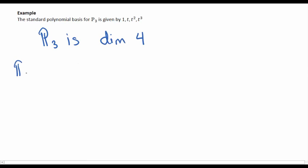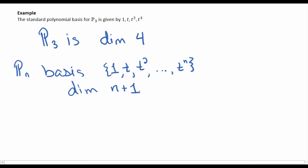So in general, for Pn, we have a basis of 1, T, T squared, T cubed, T to the fourth, et cetera, all the way up to T to the n. Since every number from 1 to n will appear as an exponent, plus you have to include this 1, Pn will always be dimension n plus 1.